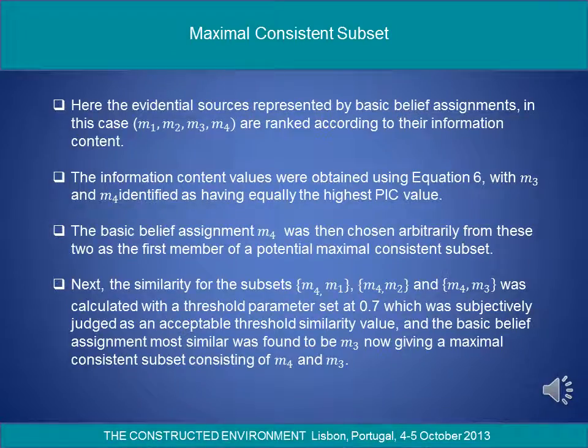Maximal consistent subset: The evidential sources represented by basic belief assignments — M1 to M4 — are ranked according to their information content. The information content values were obtained using equation 6, shown in the full paper, with M3 and M4 identified as having equally the highest probabilistic information content value. The basic belief assignment M4 was then chosen arbitrarily from these two as the first member of a potential maximal consistent subset.